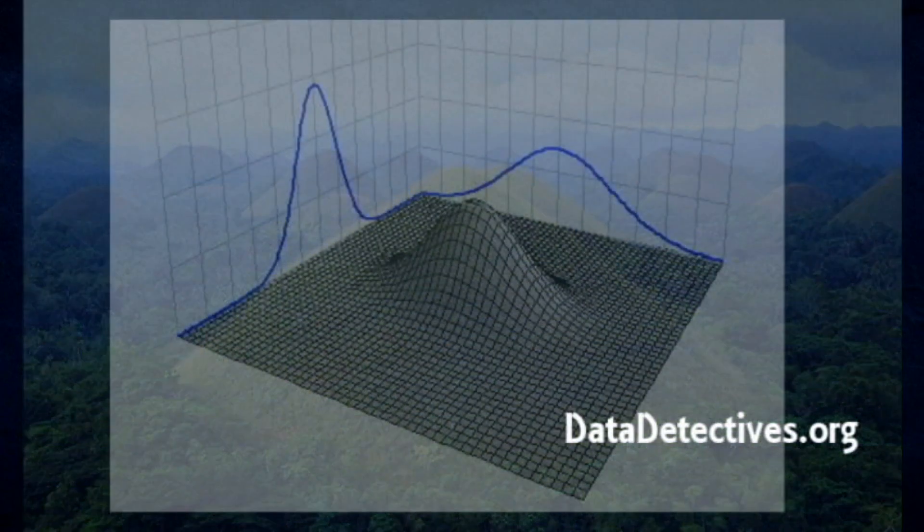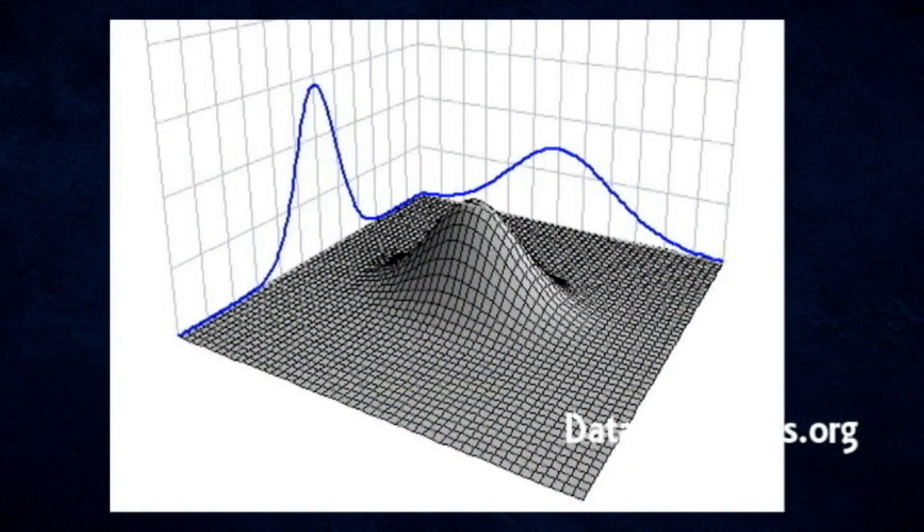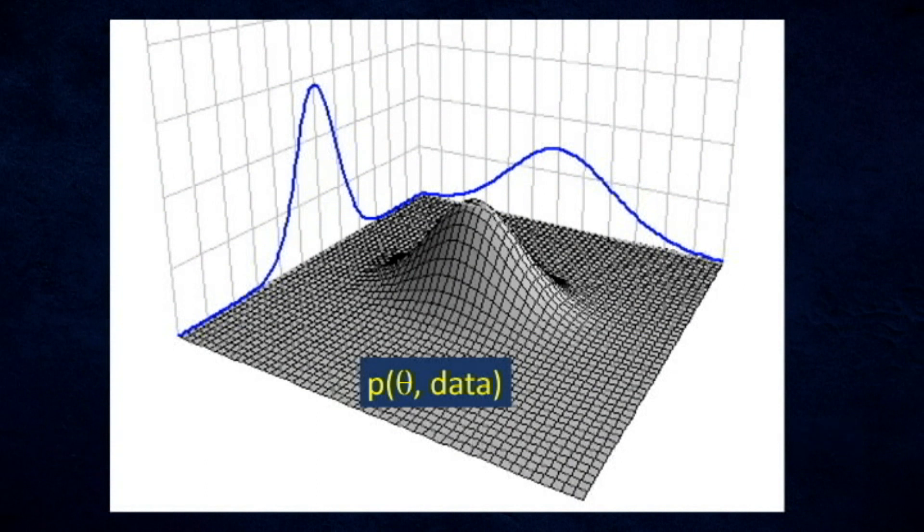Let the hill represent this joint probability distribution, which is nothing more than the distribution of two variables taken together. One of these variables is the data, which is known. The other is the distribution of parameter values for an assumed Gaussian distribution, which MCMC is trying to estimate.